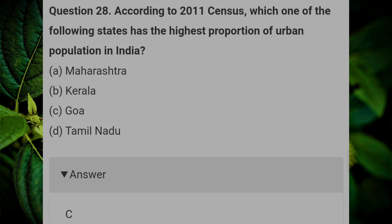According to the 2011 census, which one of the following states has the highest proportion of urban population in India? Answer: C, Goa.